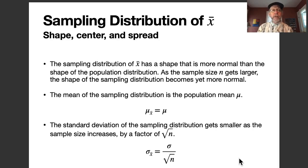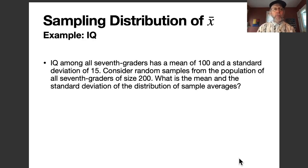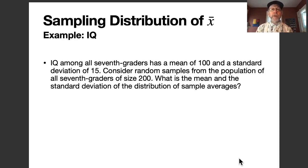This slide summarizes what happens to the shape, center, and spread of the sampling distribution of X-bar. Let's look at an example. Suppose IQ among all 7th graders has a mean of 100 and a standard deviation of 15. We consider random samples of size 200, compute X-bars, and form the sampling distribution. What is the mean and standard deviation of the distribution of sample averages?